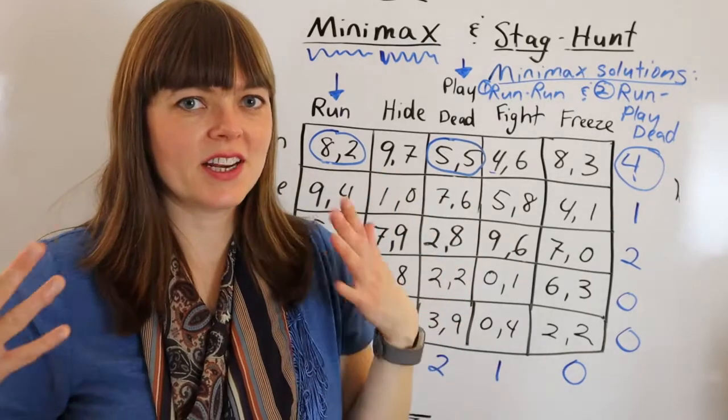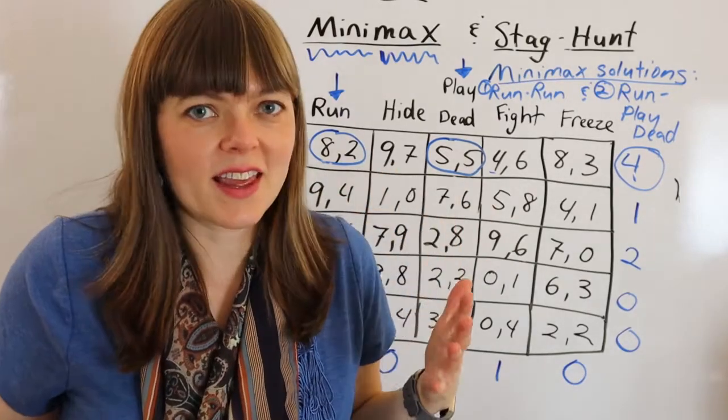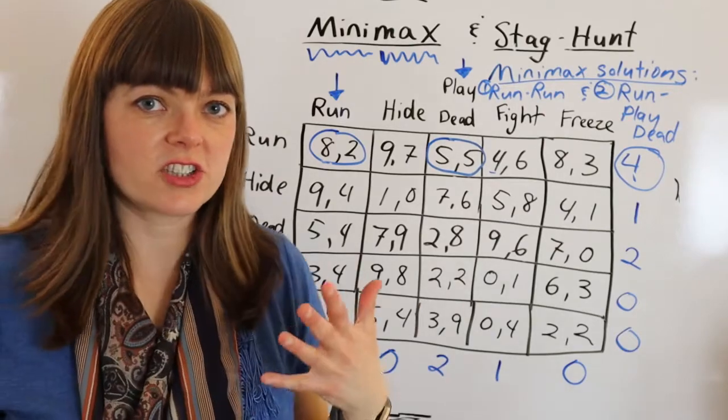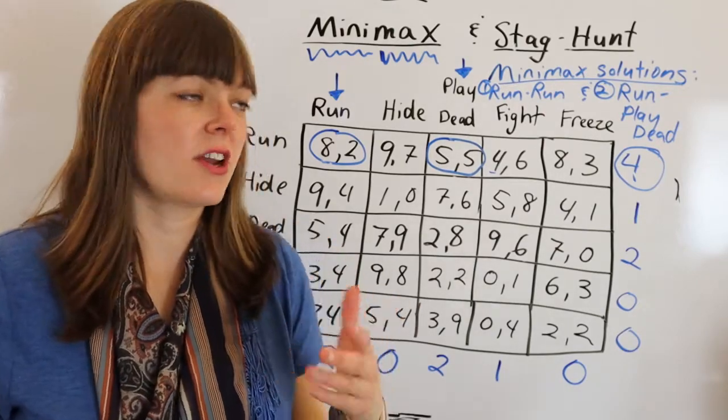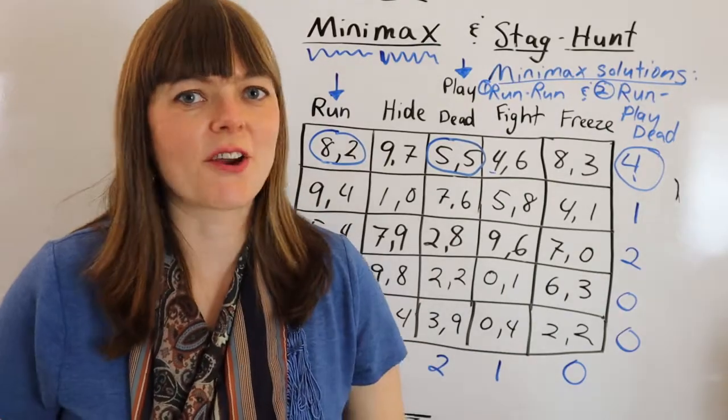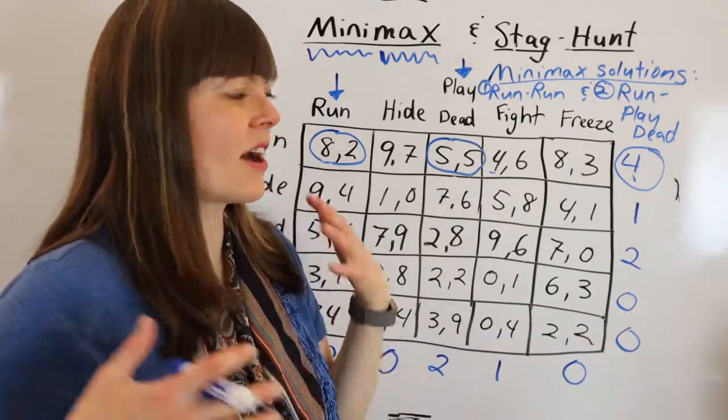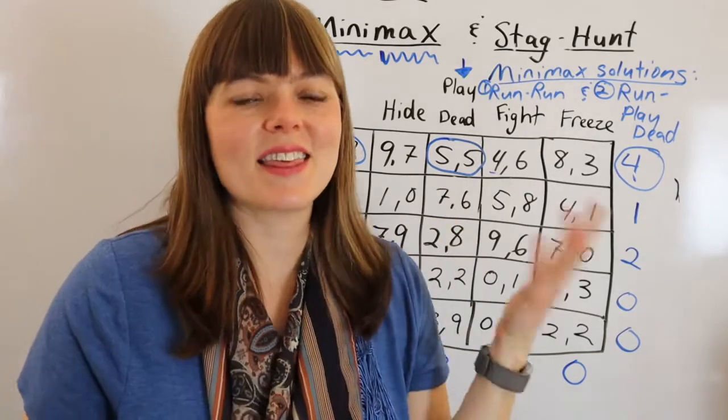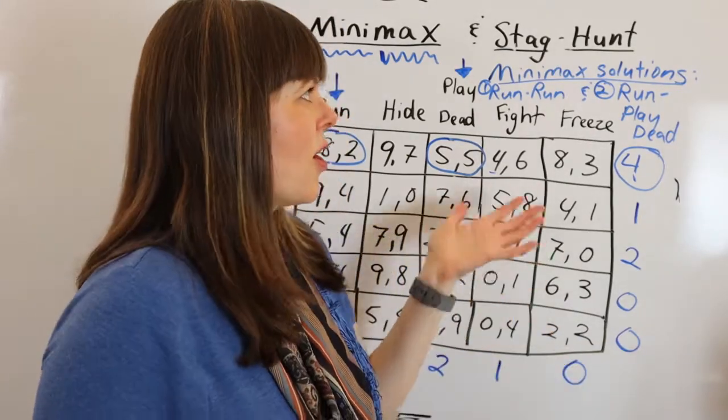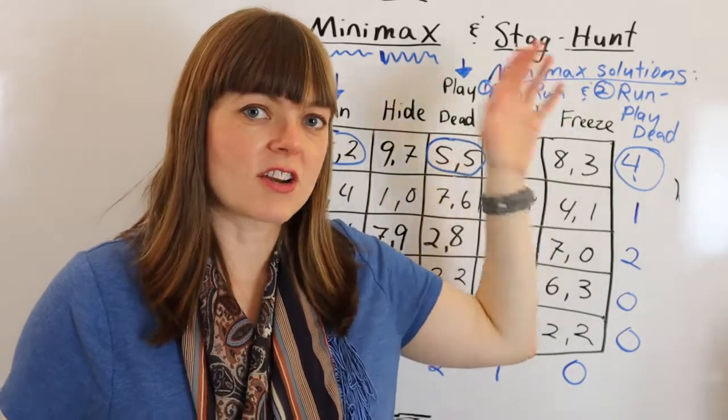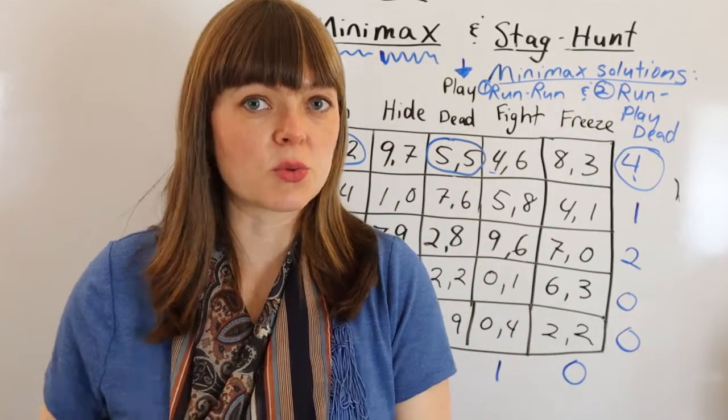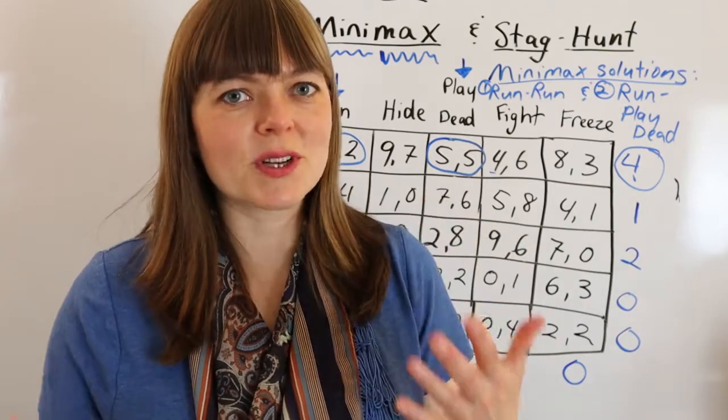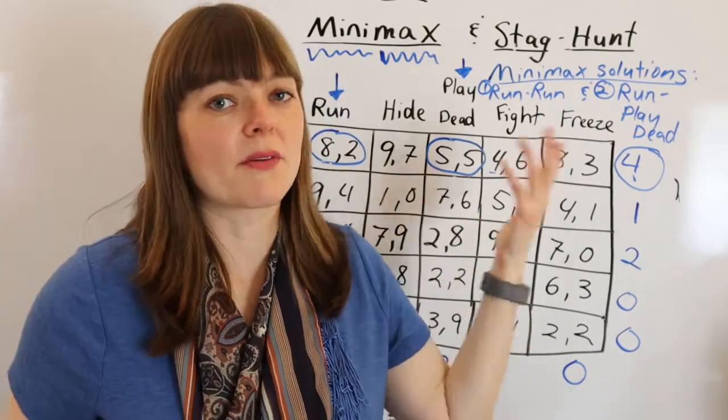And that's simply based on each player overthinking how fearful the worst case scenario for each of these strategies is, and making the decision based on the best of those worst case scenarios. That's how minimax works, that's how to think about it. It's a very useful concept, and you might think about what types of people are more likely to use a minimax strategy as opposed to a Nash equilibrium strategy or some other strategy. And it's going to be people who are risk averse, people who think a lot about the worst case scenarios.